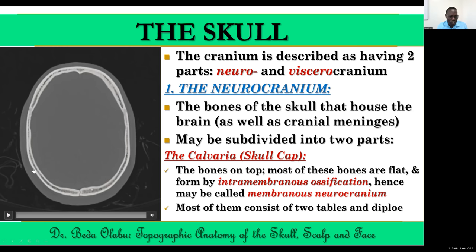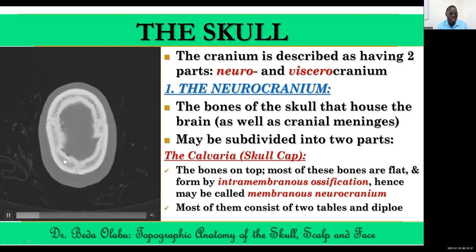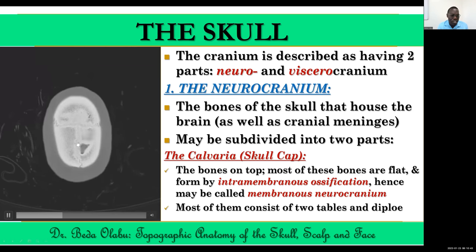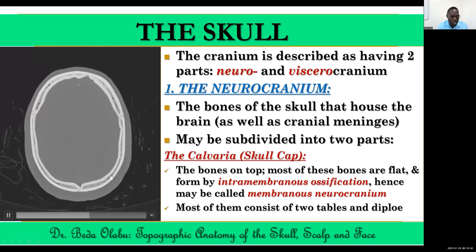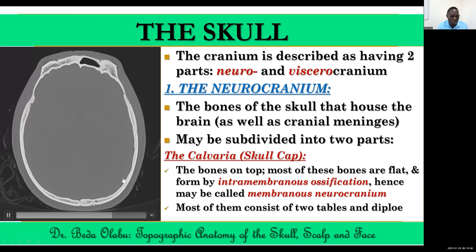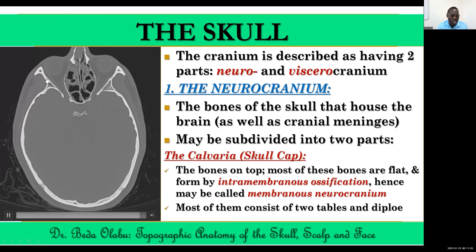I'll play this so you can see that concept. It's an axial cut scanning through the neurocranium. At the top of the skull you can see some sutures, and as you can see there is a diploë sandwiched between two cortical plates. The cut moves from the calvaria down to the level of the orbit, where calvaria bones are still visible on the sides.